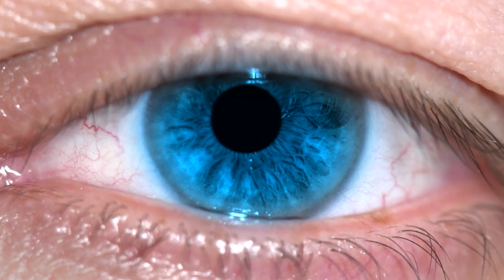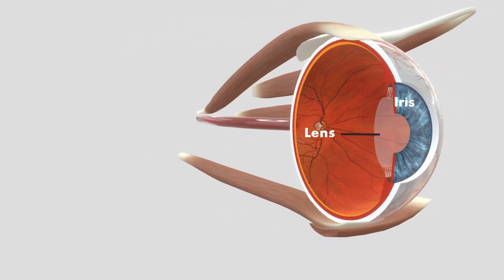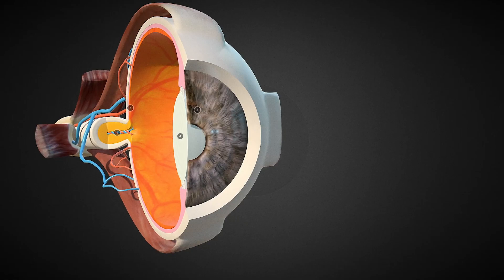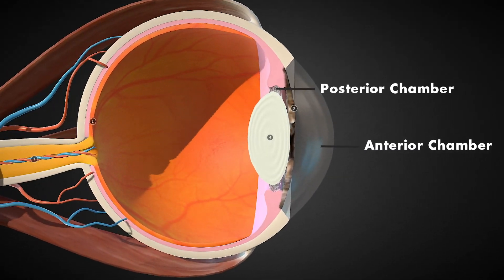Iris has different colors in different people. Iris is present behind the cornea and in front of the lens. Iris divides the anterior segment of the eye into anterior and posterior chambers.